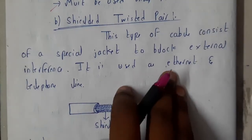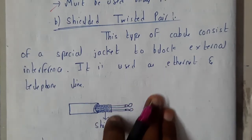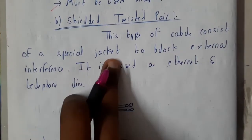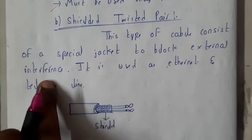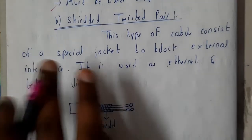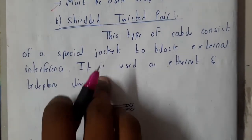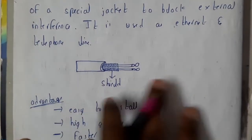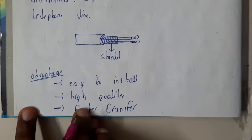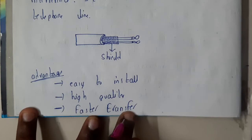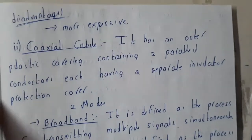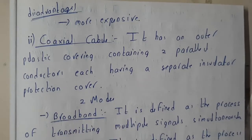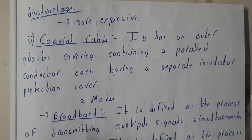Shielded Twisted Pair (STP) has a special jacket — a shield — to block external interference, unlike UTP which blocks interference by itself. STP is used for Ethernet and telephonic LANs. Its advantages are: easy to install, high quality, and faster data transfer. The only disadvantage is that it is more expensive compared to unshielded twisted pair.